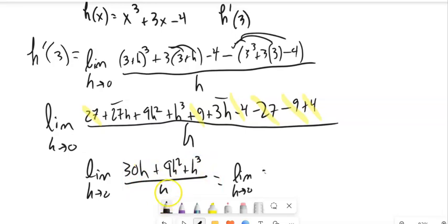So 30h divided by h is 30. 9h squared divided by h is 9h. h cubed divided by h is h squared.